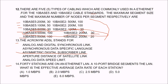Question 14: 40 stations are on an Ethernet LAN, and a 10-port bridge segments the LAN. What is the effective average data rate of each station? The answer is 2.5 Mbps. With 40 stations and a 10-port bridge segmenting the LAN, the effective data rate works out to 2.5 Mbps.